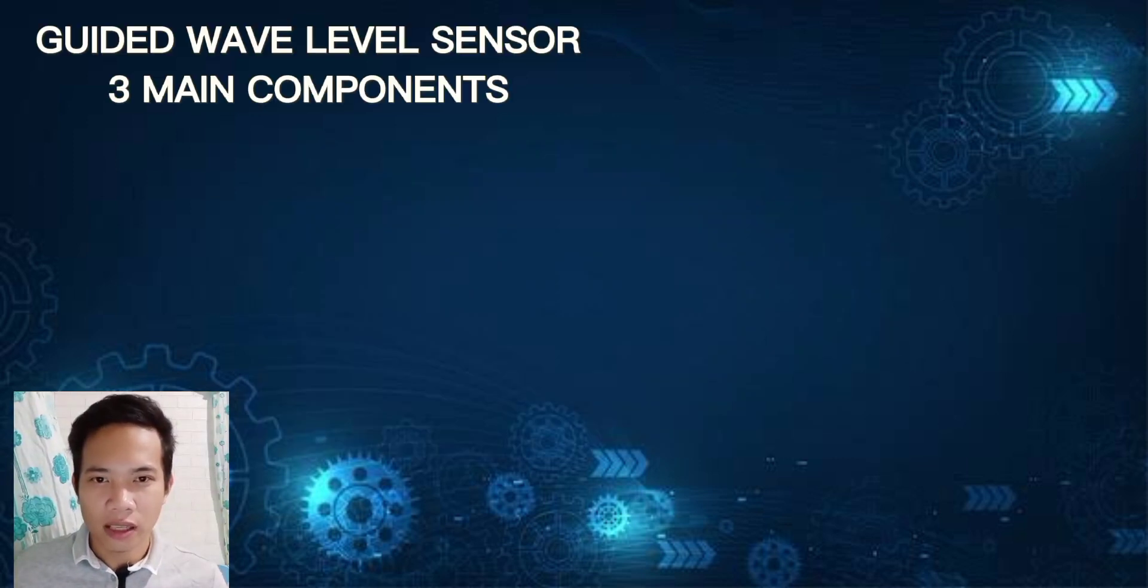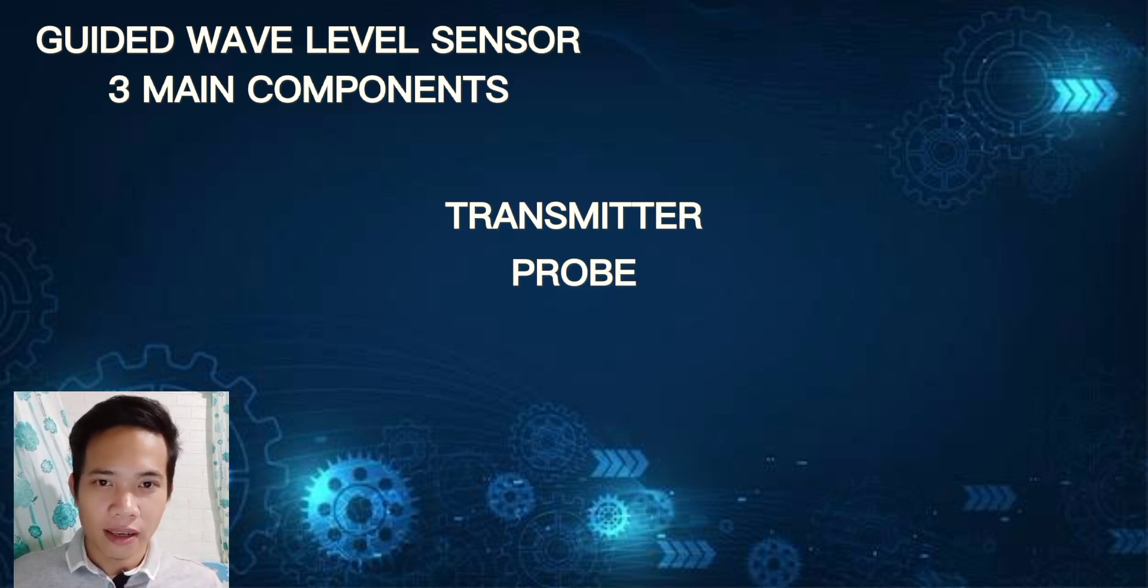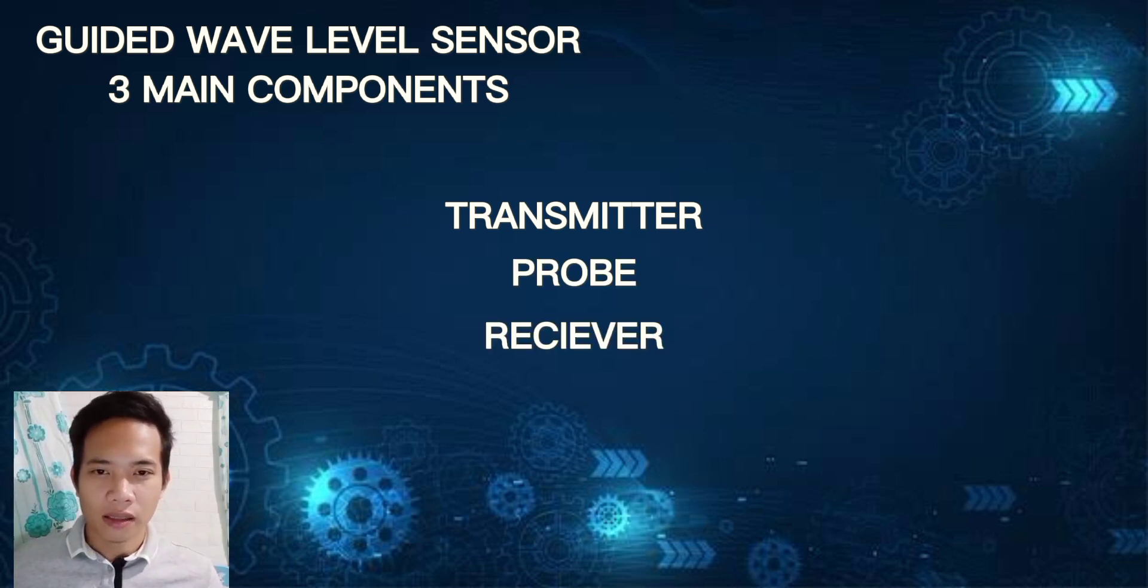The guided wave level sensor has three main components: the transmitter, which is responsible for generating and sending an electromagnetic signal down the probe. The probe is in contact with the material inside the tank. The receiver detects the signal that has traveled through the material and reflects back to it.